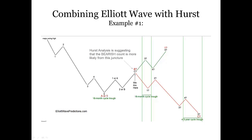Let's look at a couple of examples of how I use Hurst cycle analysis to assist in determining which Elliott Wave count is most likely to be correct. In this example, after price moved down in a five-wave impulse into an 18-month cycle trough, subsequent price movement so far has moved up in three waves. As Elliottians, we can label the upward movement as A, B, C — or one, two, and wave three underway of an eventual five-wave move to the upside. But which of those wave counts is most likely? There are many times in Elliott Wave where there's just no way to know which of these future outcomes is most likely. This is where Hurst cycle analysis comes in very handy.